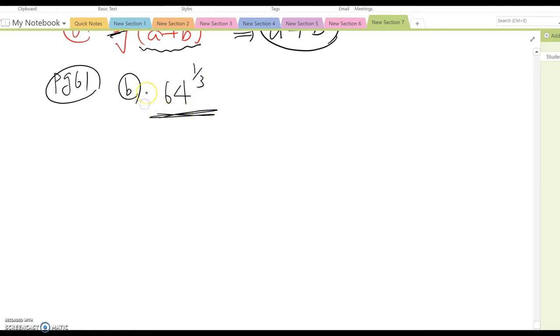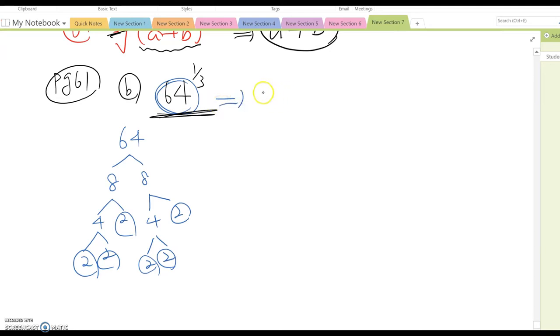This means in order to simplify this expression, you need to prime factorize this number first. So 64 means what? Yeah, 8 times 8, and then this becomes 4 times 2 and 2 times 2, so 4 times 2 and 2 times 2. You can rewrite this one, two, three, four, five, six, so 64 means 2 to the sixth power, and that to the 1/3 power.